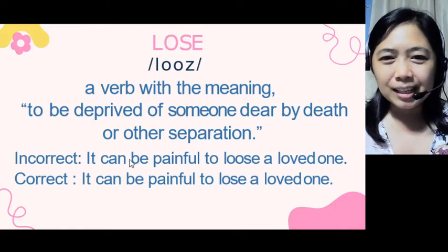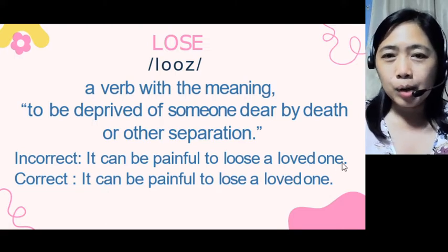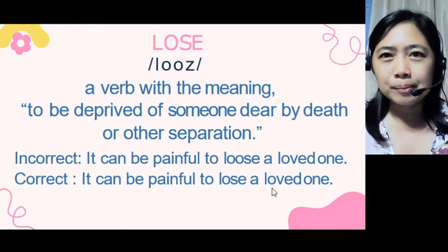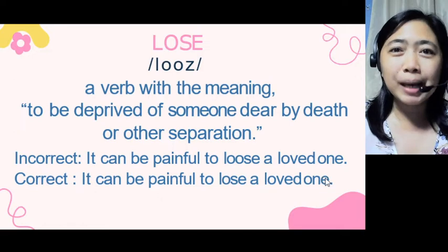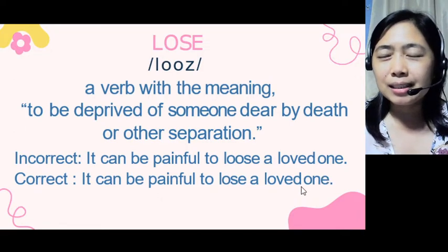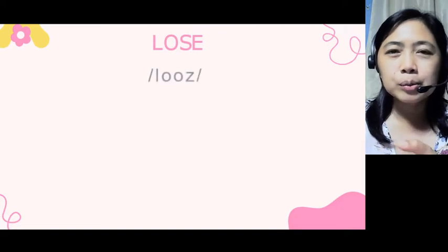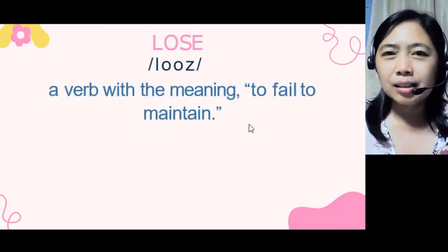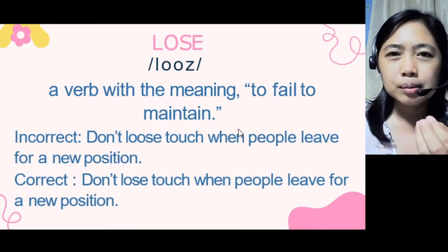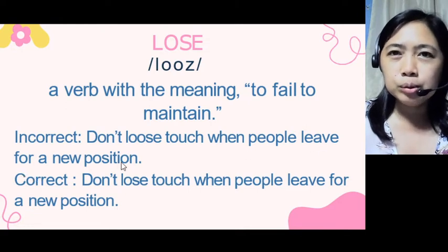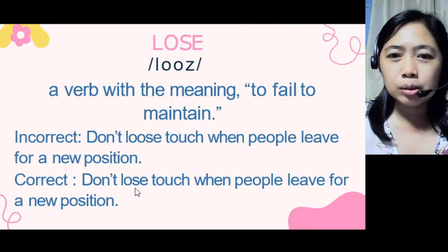Here are simple sentences to clear your mind. It is correct to say: 'It can be painful to lose a loved one.' Note that 'loved one' is always spelled with the letter D. Another use of 'lose' means to fail to maintain. The correct sentence is: 'Don't lose touch when people leave for a new position.' This uses the spelling L-O-S-E.